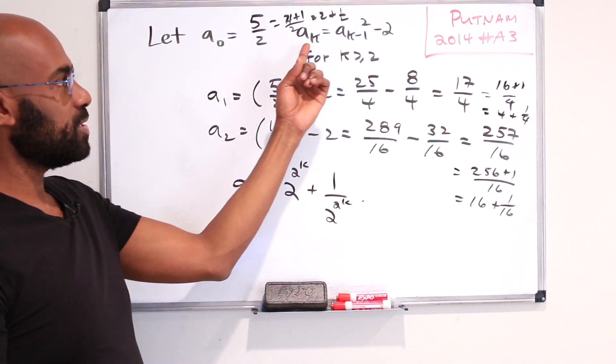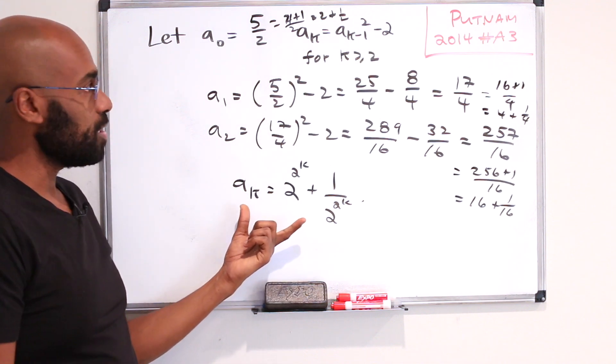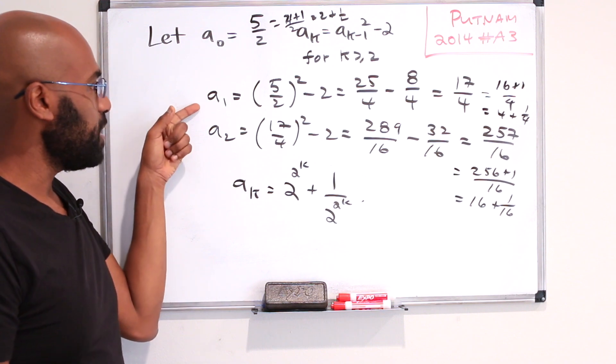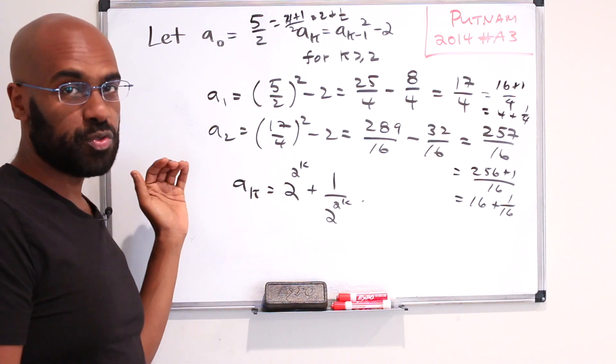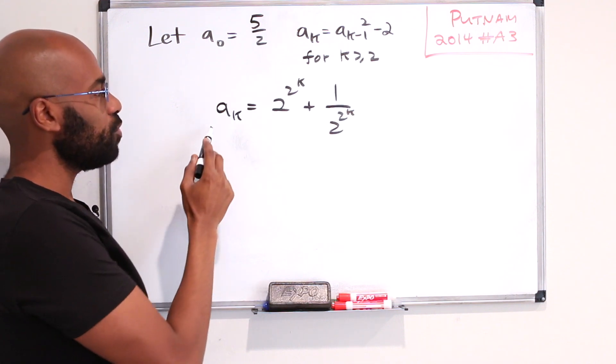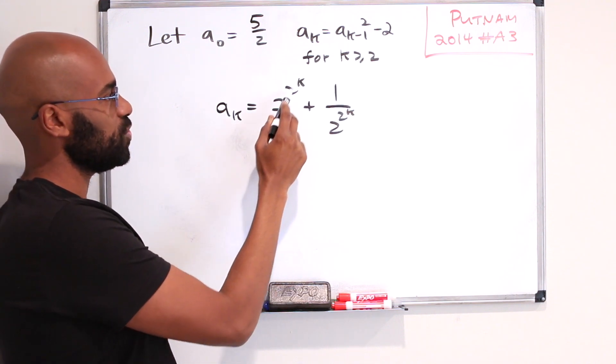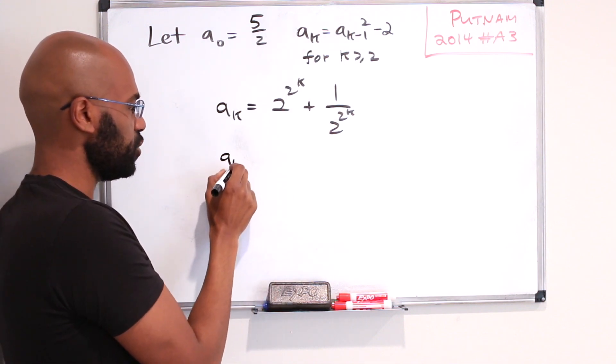And since we have a sequence definition, what we can do to establish this is try to prove it inductively. We have the base case where k equals 1 being true, so we'll do the inductive step now. So for the inductive step we'll suppose that for some k, a_k is 2^(2^k) plus 1 over 2^(2^k). And let's look at our recurrence relation.